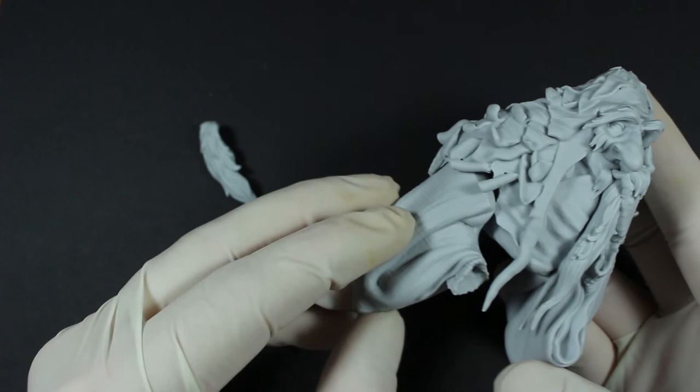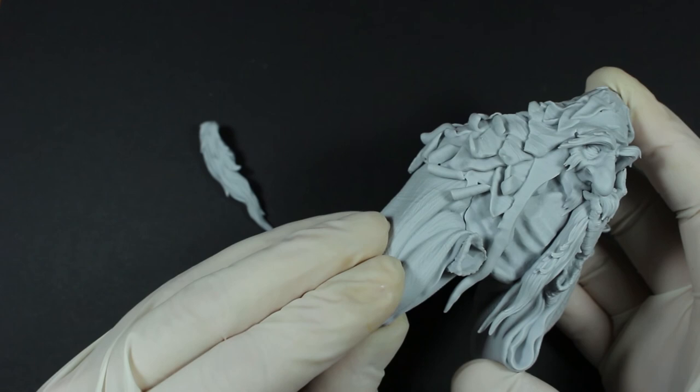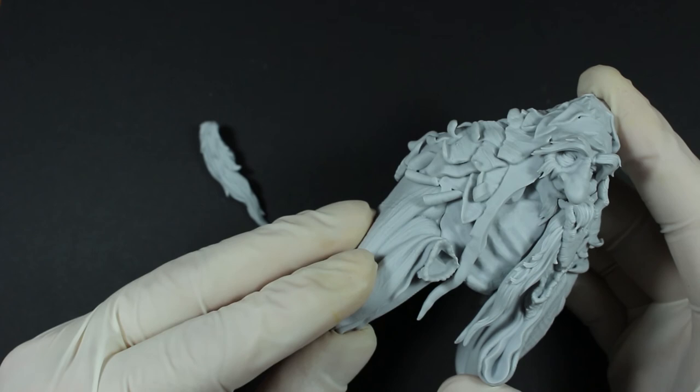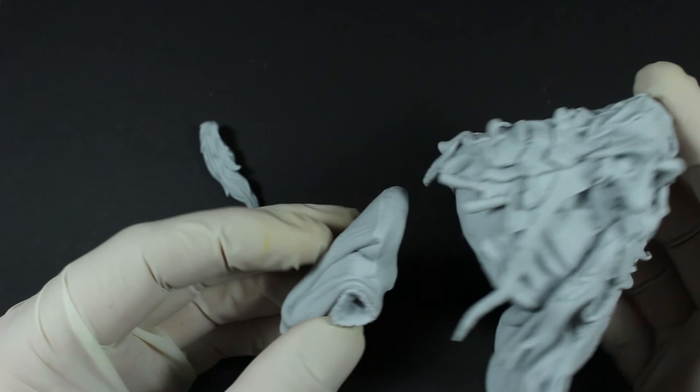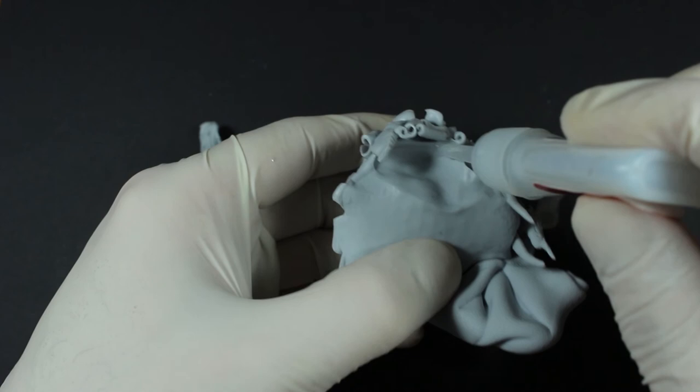So we'll test fit the other arm now. Just make sure it's secure on both sides and there's no huge gaps or anything like that. And we'll pop some glue on the inside of this one and get that stuck down.